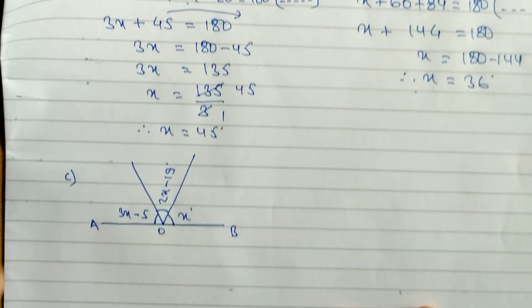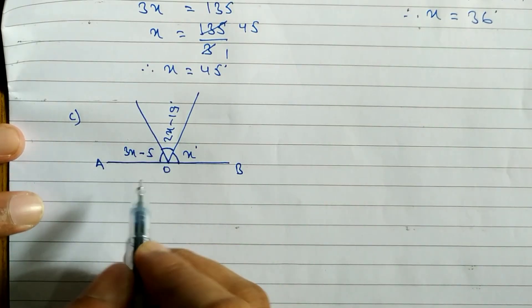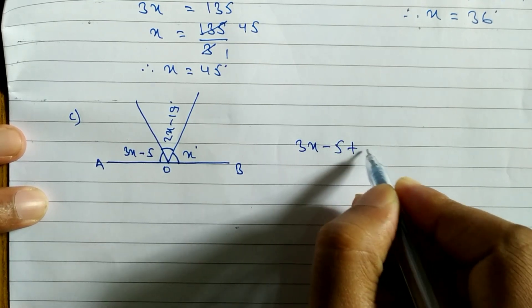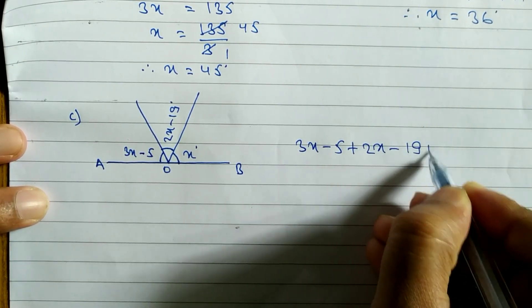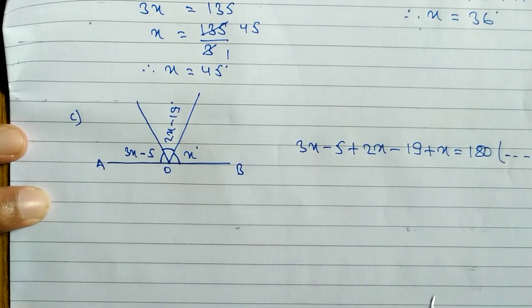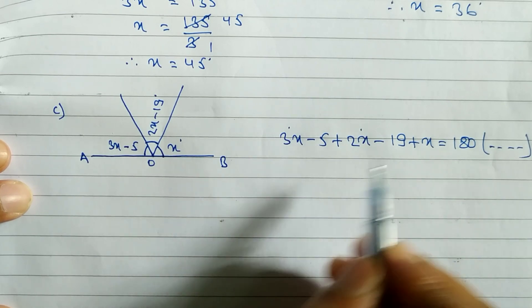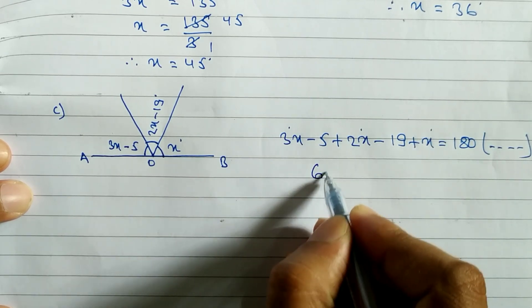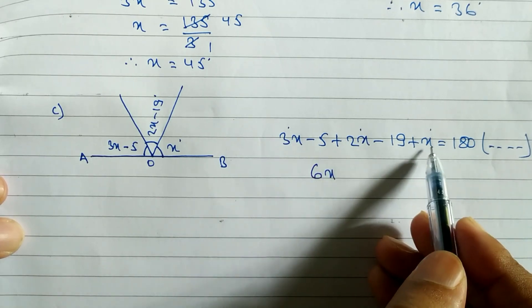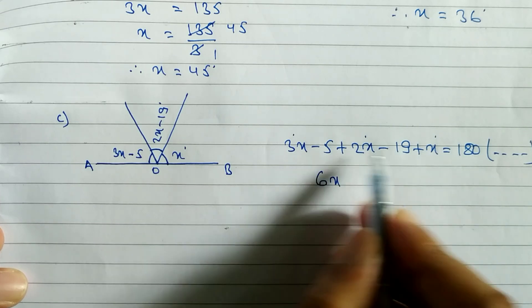Now look at the next question. When you add these three angles we get 180 degrees. So: 3x minus 5 plus 2x minus 19 plus x is equal to 180 degrees. The reason is: supplementary angle. Now combining the x terms: 3x plus 2x gives 5x, and 5x plus x gives 6x.